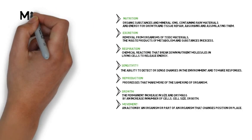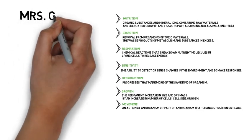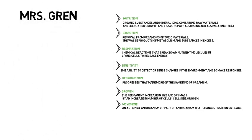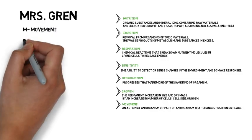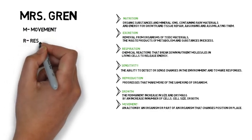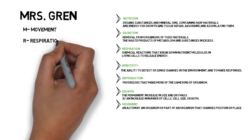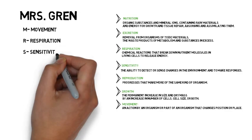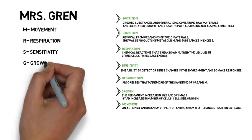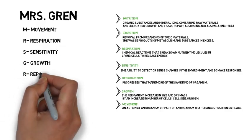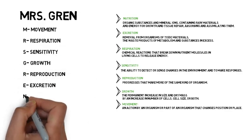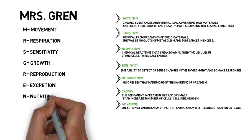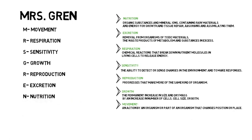The 7 characteristics can be memorised by the term MRS. GREN: M for Movement, R for Respiration, S for Sensitivity — that's Mrs. — G for Growth, R for Reproduction, E for Excretion, N for Nutrition. That's GREN. MRS. GREN.